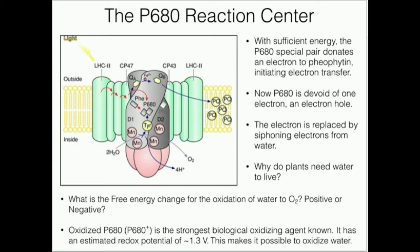When the P680 special pair receives sufficient energy from UV photons, it's able to donate an electron to an electron acceptor. That electron acceptor specifically is pheophytin, but we're not going to concern ourselves with that now. When the special pair donates an electron, it's essentially acting as a reducing agent — it's reducing an electron acceptor.